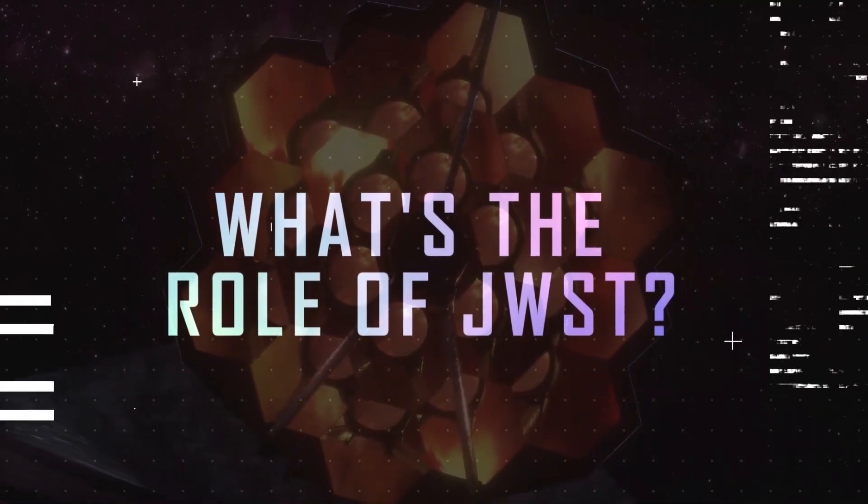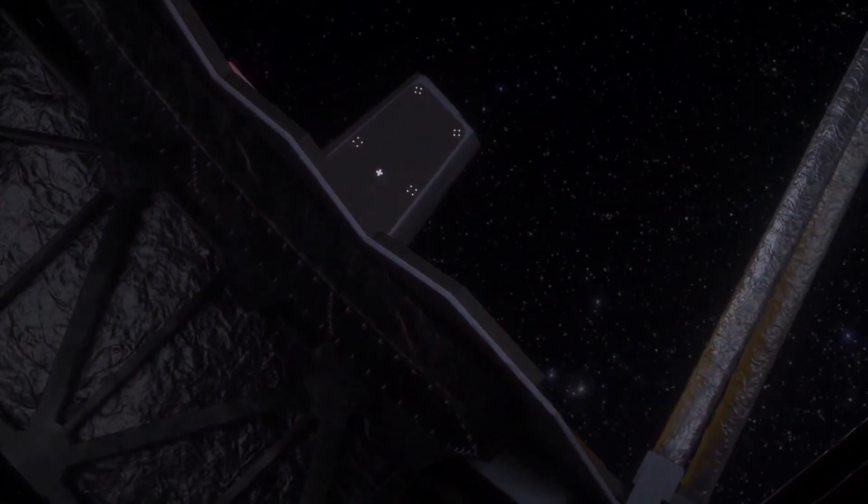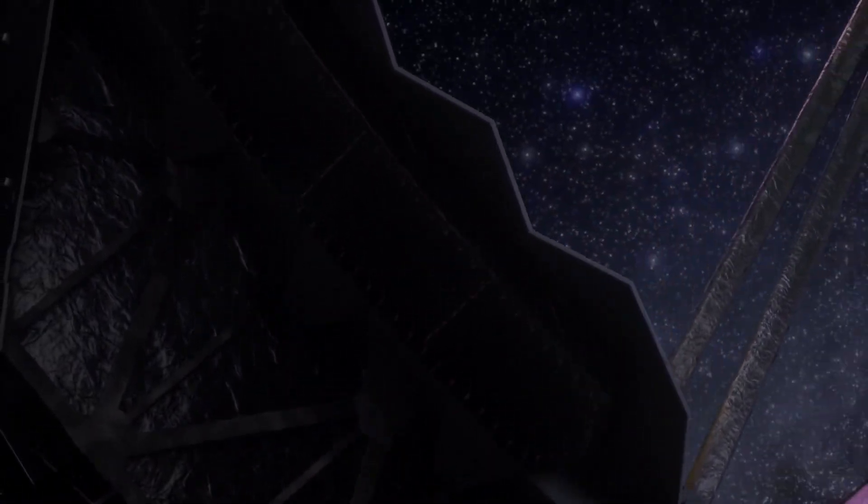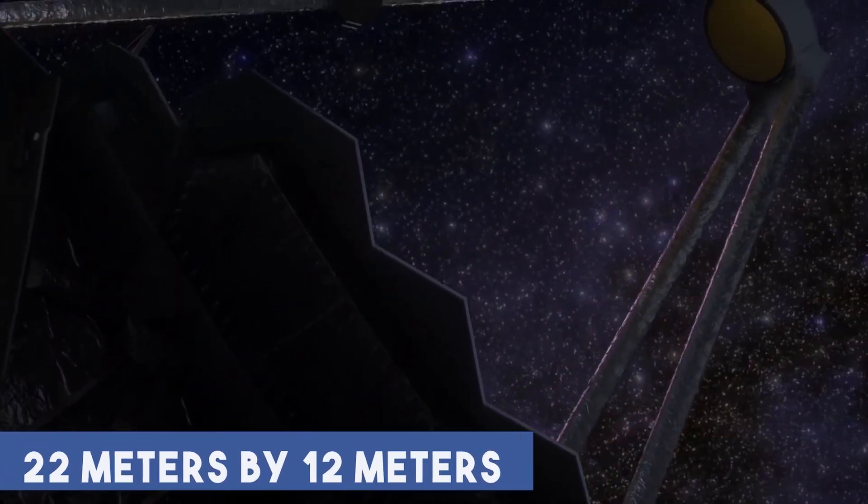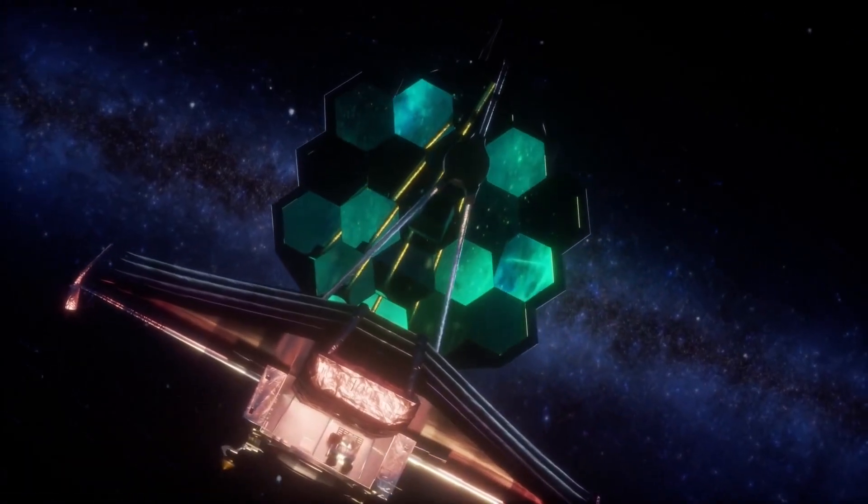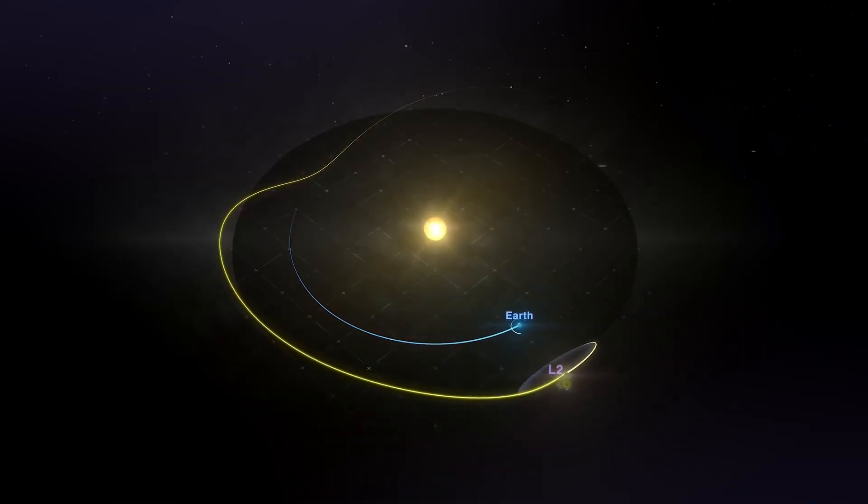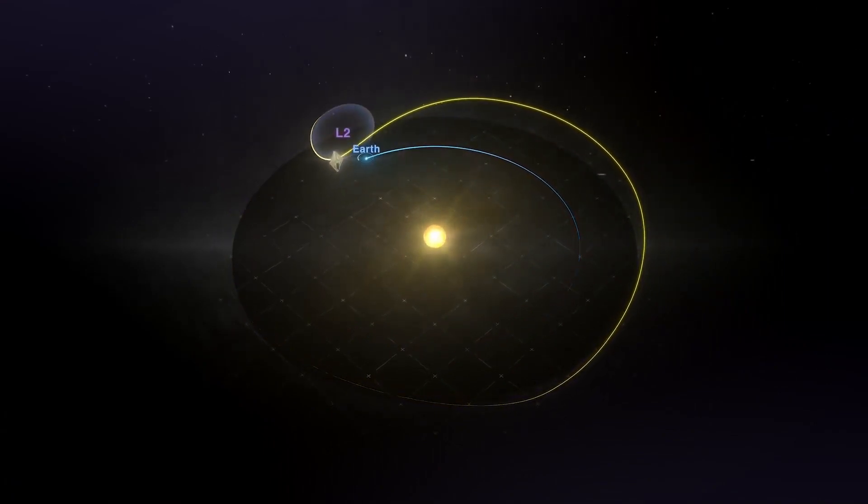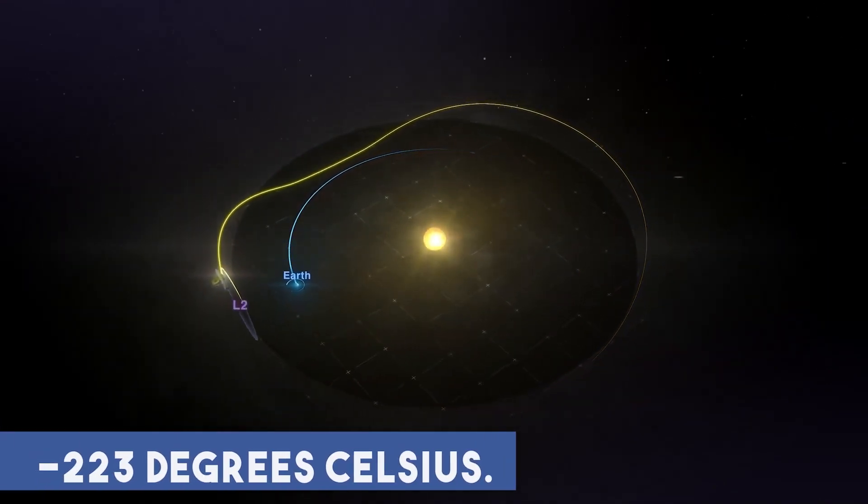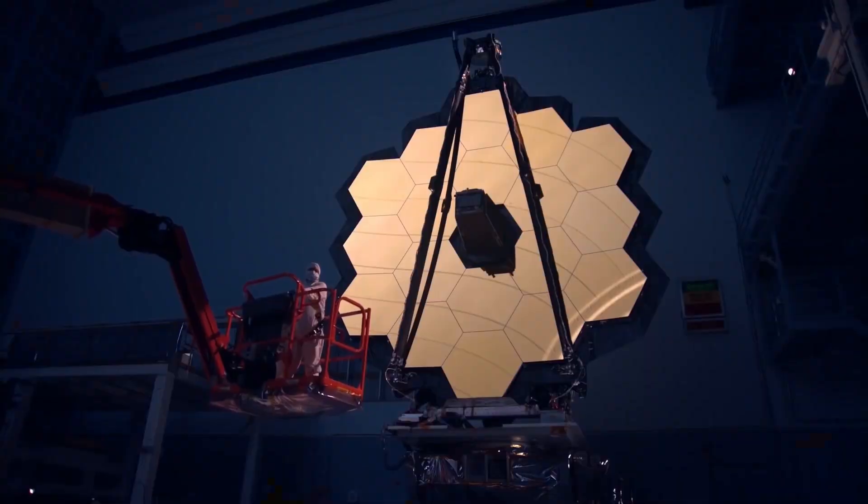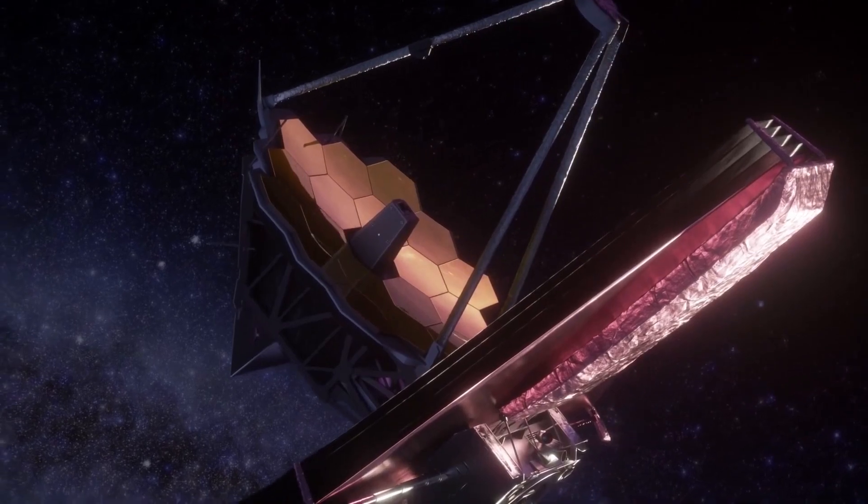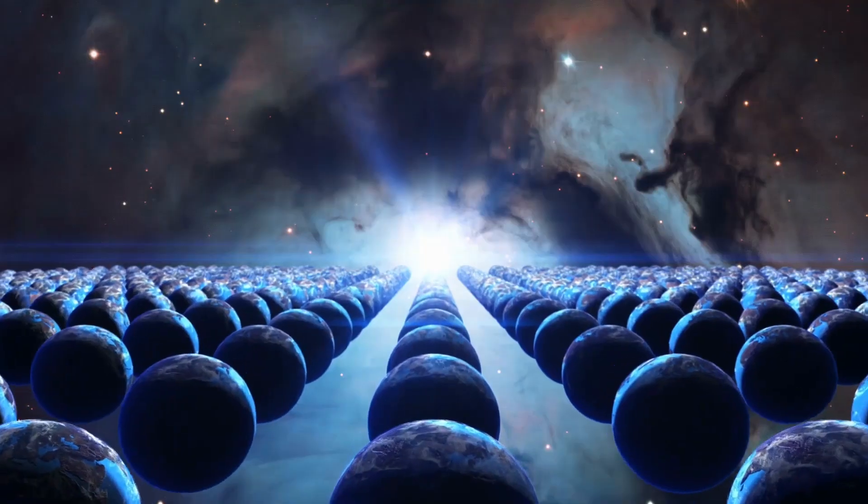This is where the James Webb Space Telescope, the mother of all telescopes, kicks in. It features a large sunshield that measures 22 meters by 12 meters, nearly the size of a tennis court. It'll orbit the sun at up to 1.5 million kilometers per hour, reaching temperatures of minus 223 degrees Celsius. Its mission is to investigate the universe's earliest light and celestial objects that appeared immediately after the Big Bang.